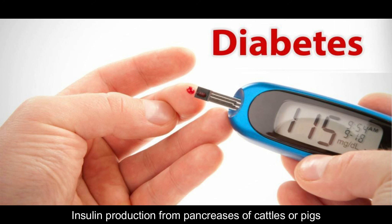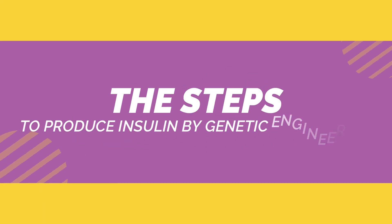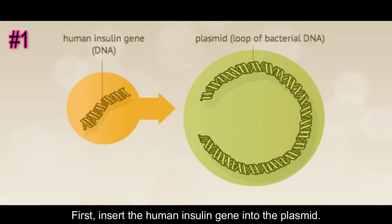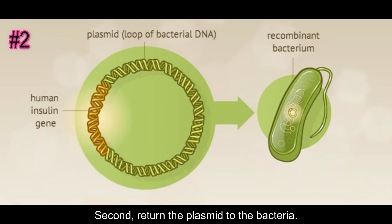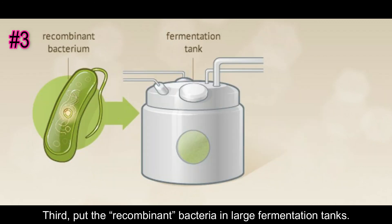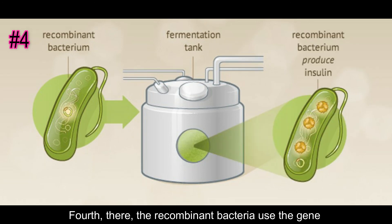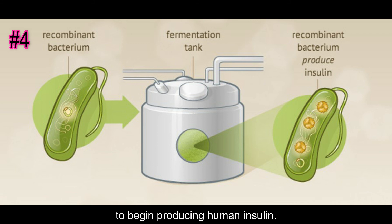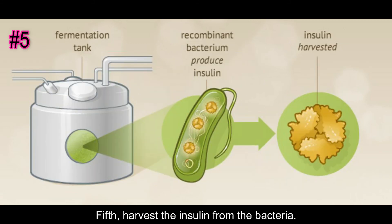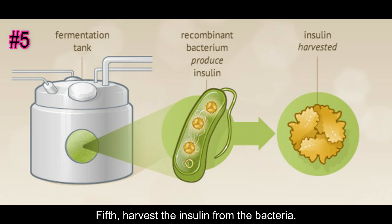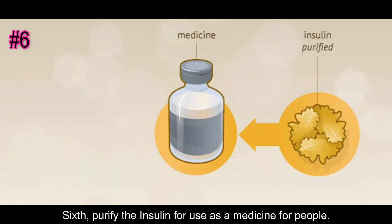Producing insulin from the pancreas of cattle or pigs takes time and only produces small amounts of insulin. The steps to produce insulin by genetic engineering are: first, insert the human insulin gene into a plasmid; second, return the plasmid to the bacteria; third, put the recombinant bacteria in large fermentation tanks; fourth, there the recombinant bacteria use the gene to begin producing human insulin; fifth, harvest the insulin from the bacteria; sixth, purify the insulin for use as medicine for people.